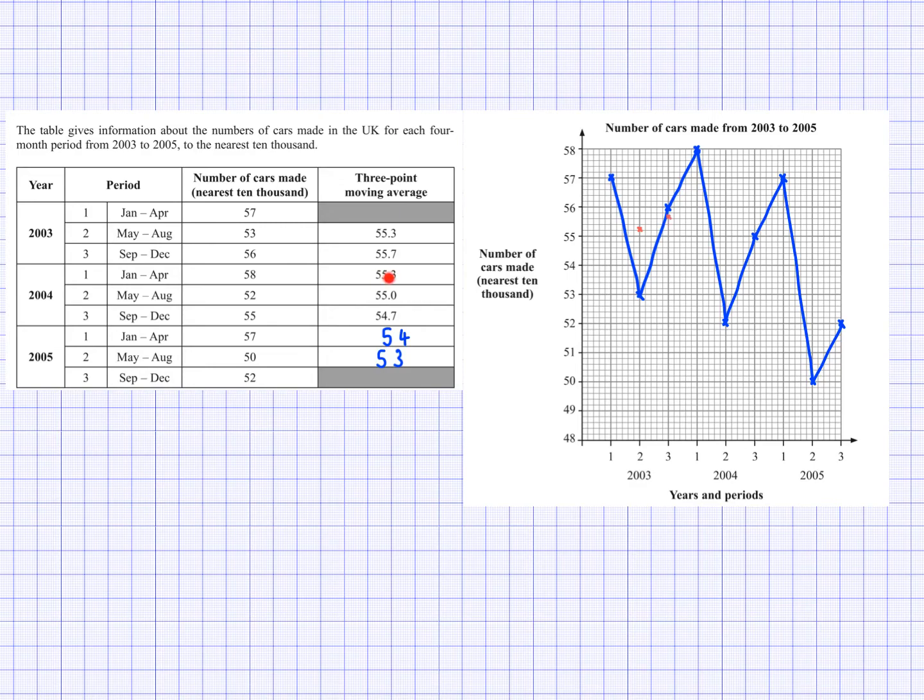The next one, so the third of these values. So the middle value that I used to find this three-point moving average here is this 58 here. And that is first season of 2004. So first season of 2004 would be plotted with 55.3. So 55.3 is about here. And I'm going to go ahead and plot the rest of these values with the corresponding values that will go here.